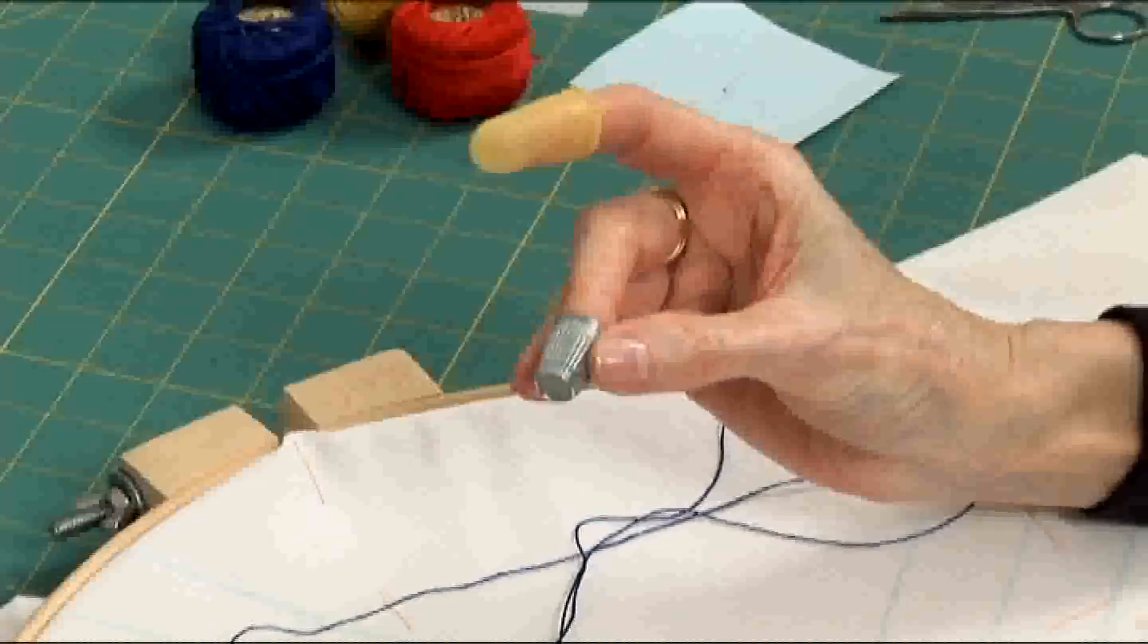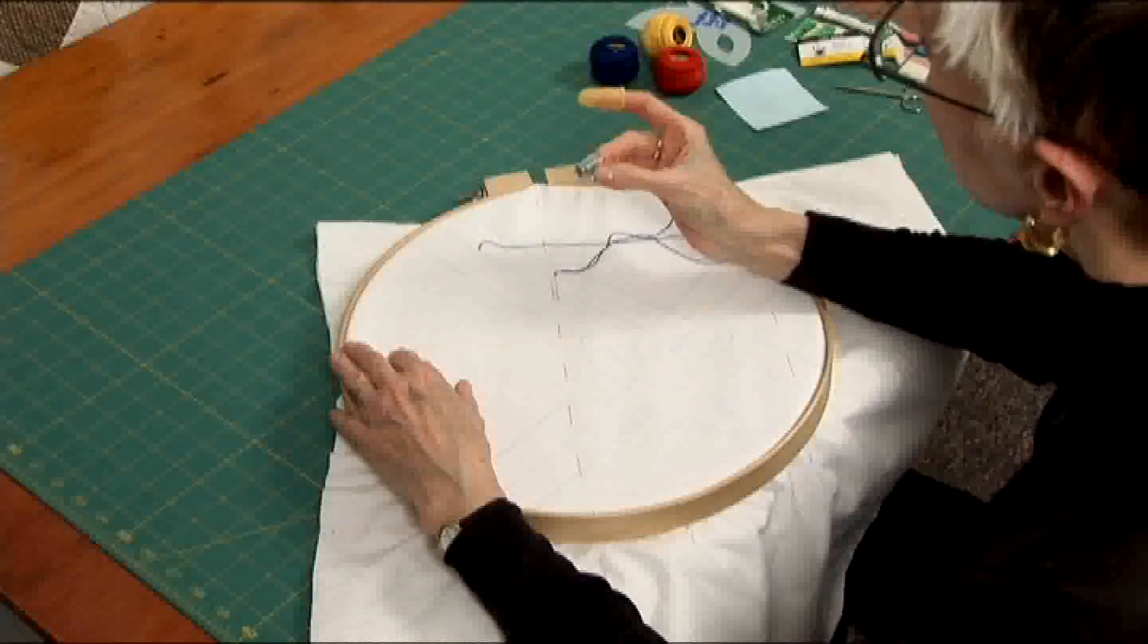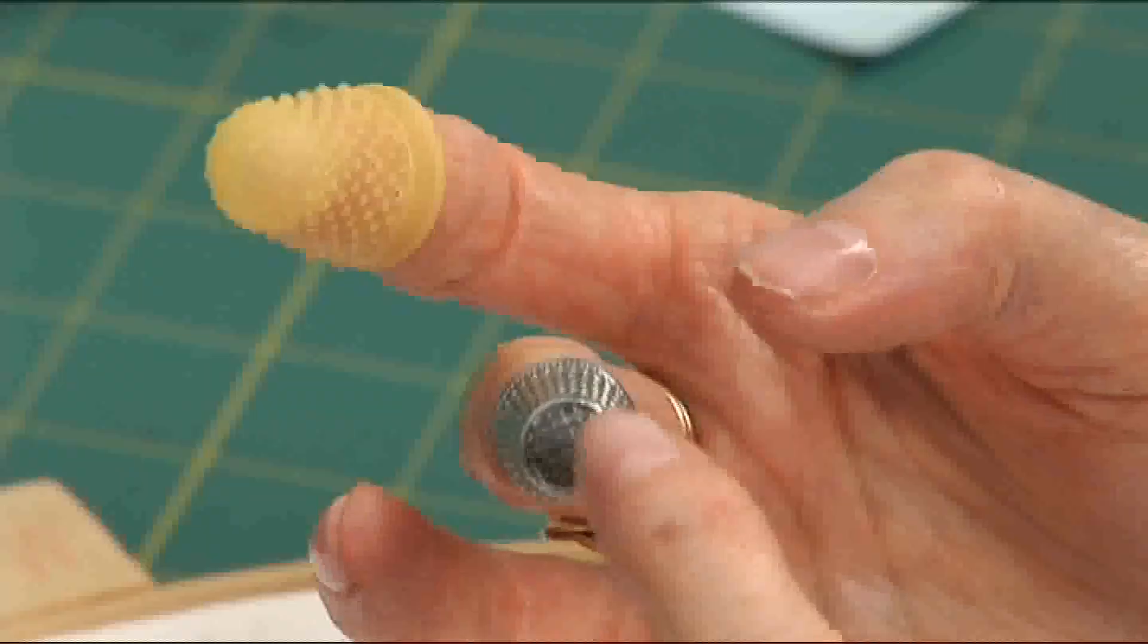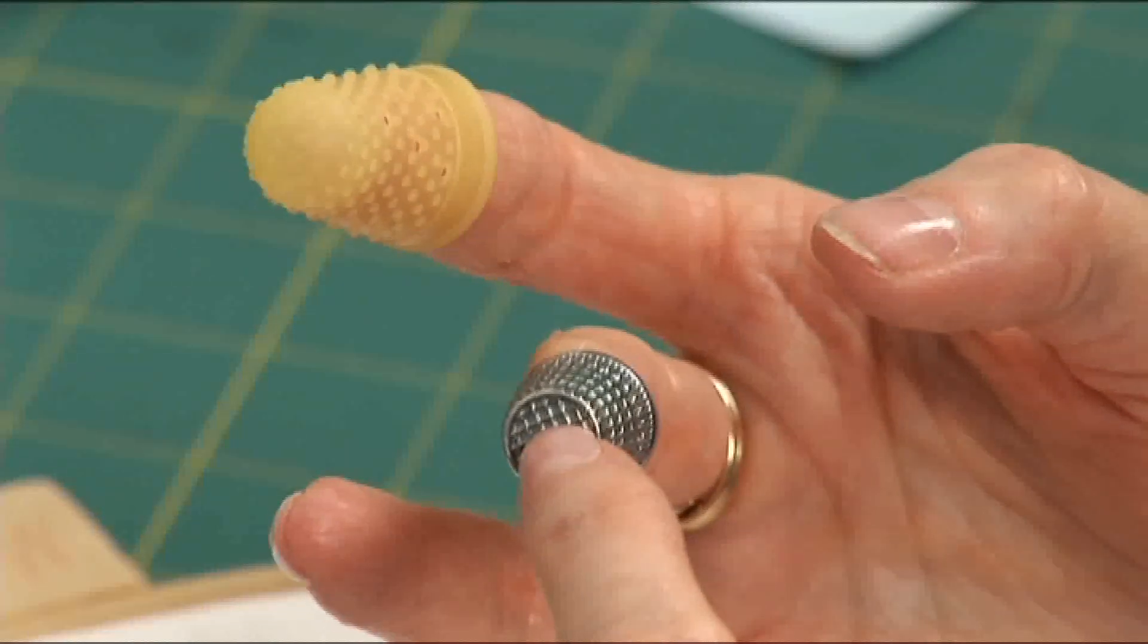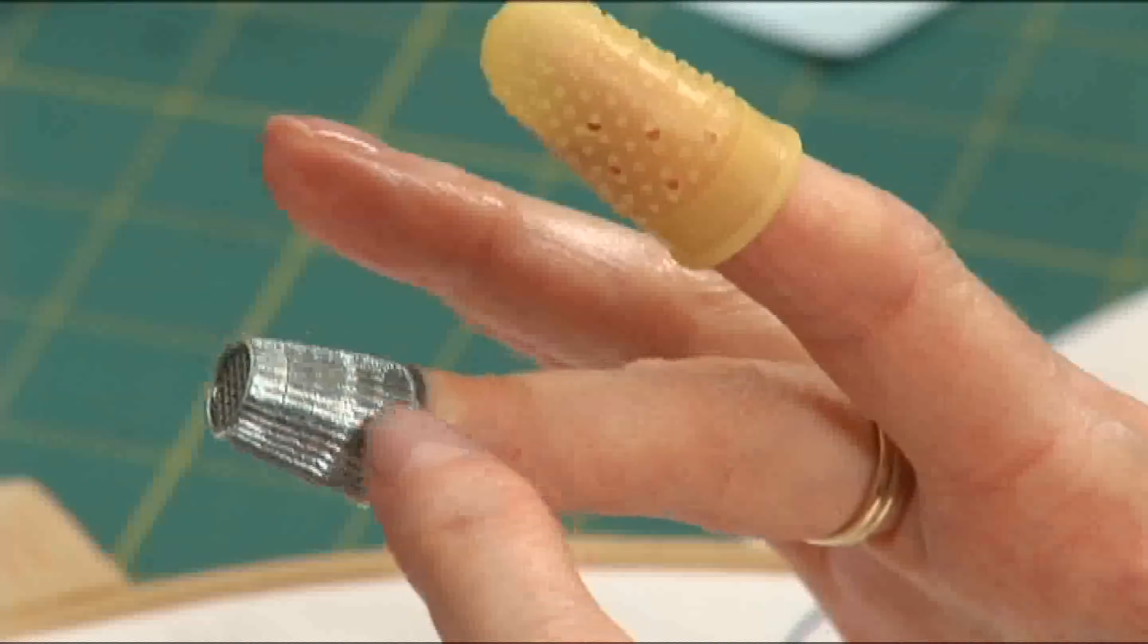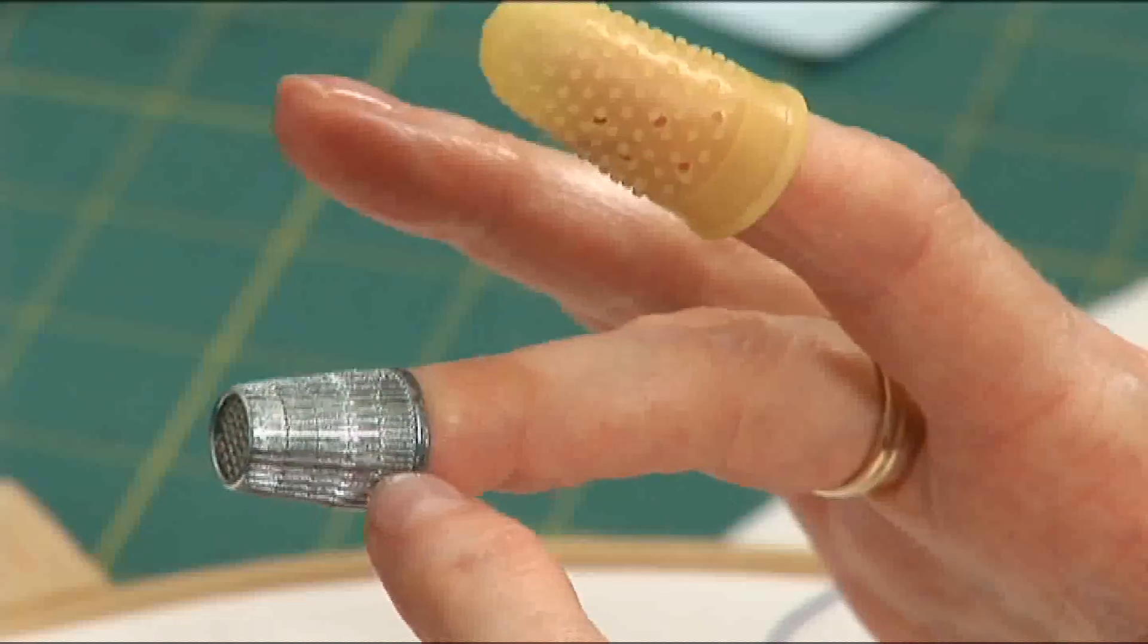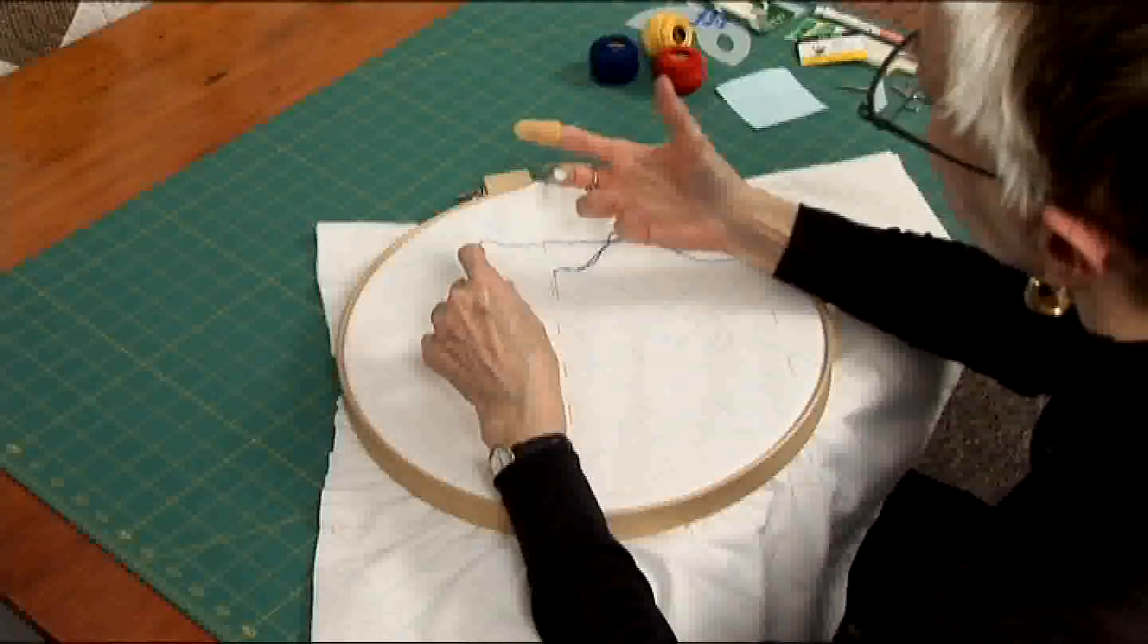Again, the thimble that I like is a metal one. It's inexpensive. It has a dished top with indentations on it and deep ridges along the sides to hold the needle as you quilt.